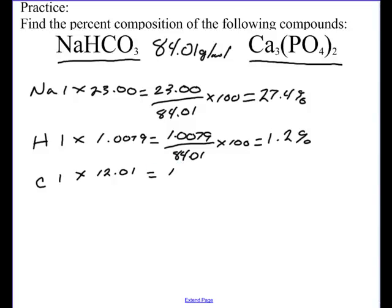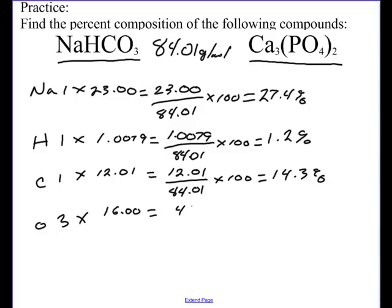For carbon, 1 times 12.01, which is 12.01, divided by 84.01 times 100, that equals 14.3%. And last but not least, I've got oxygen. There's three of them. Oxygen weighs approximately 16 grams per mole. That gives me 48, divided by 84, times 100, and that equals 57.1%. Now if you add those all up, it adds up to 100%. This is something we should do just to check ourself.